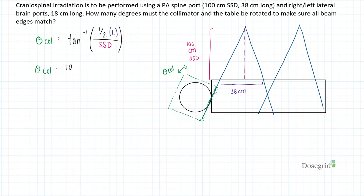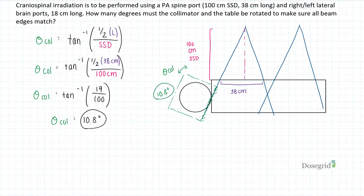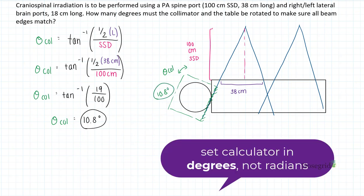That equals the inverse of tan times one-half of 38 cm divided by 100 cm. Calculate it out. You get 10.8 degrees for the collimator. Also, make sure your calculator is set in degrees and not radians.